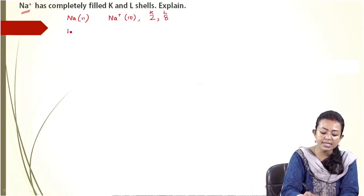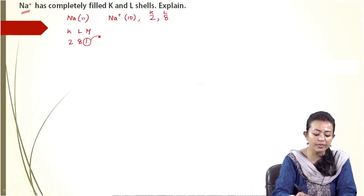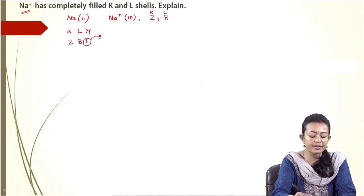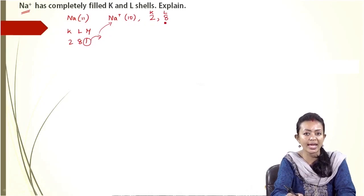So in sodium atom, it is K, L, M: 2, 8, and 1. So this one electron is given away. So as it gives away this one electron, it gets converted into sodium ion with atomic number 10, which is equal to 2 and 8.